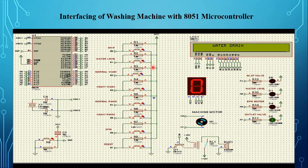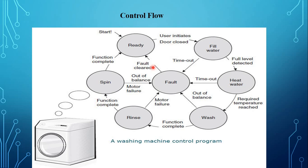This is the control flow diagram of washing machine. The sequence is: start the washing machine, fill water, heat the water, after reaching the required temperature begin the washing process, then rinse, then spin operation, then end. This is the washing machine control flow diagram.